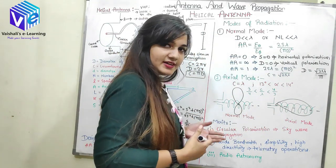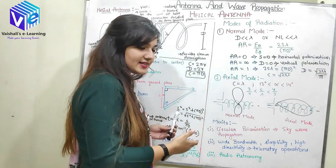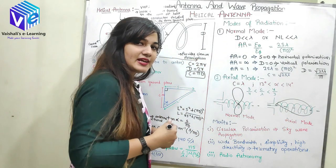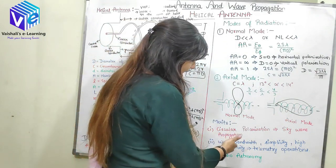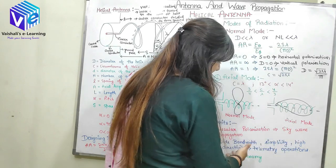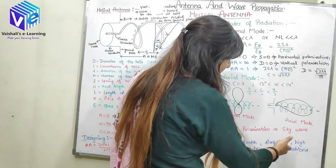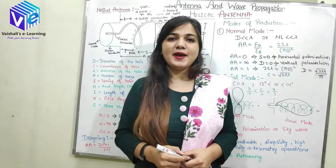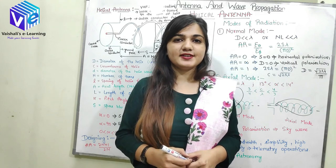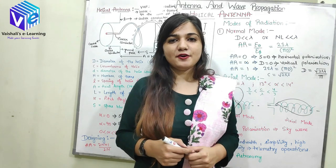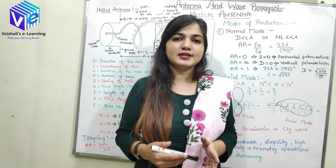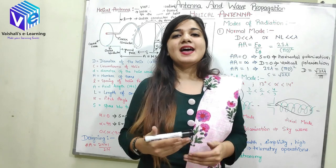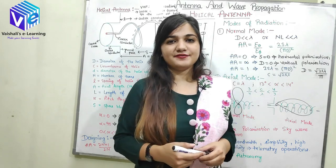Now we will see the merits of the helical antenna. First, it gives circular polarization, which is important for sky wave propagation. Second, it has wide bandwidth, simplicity, and high directivity, which is necessary for telemetry operations. Third, it is used in radio astronomy. I hope you understood the various things about the helical antenna. In the next video, I will discuss another antenna. If you like this video, share it with your friends and subscribe to this channel for further videos. Thank you.